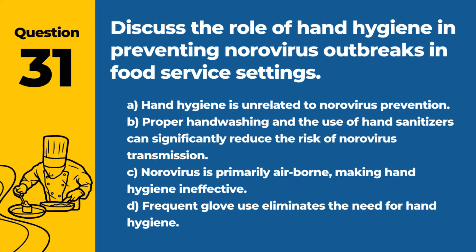Question 31. Discuss the role of hand hygiene in preventing norovirus outbreaks in food service settings. a. Hand hygiene is unrelated to norovirus prevention. b. Proper hand washing and the use of hand sanitizers can significantly reduce the risk of norovirus transmission. c. Norovirus is primarily airborne, making hand hygiene ineffective. d. Frequent glove use eliminates the need for hand hygiene. Answer: b. Proper hand washing and the use of hand sanitizers can significantly reduce the risk of norovirus transmission. Hand hygiene is a critical control measure in preventing foodborne illness outbreaks.